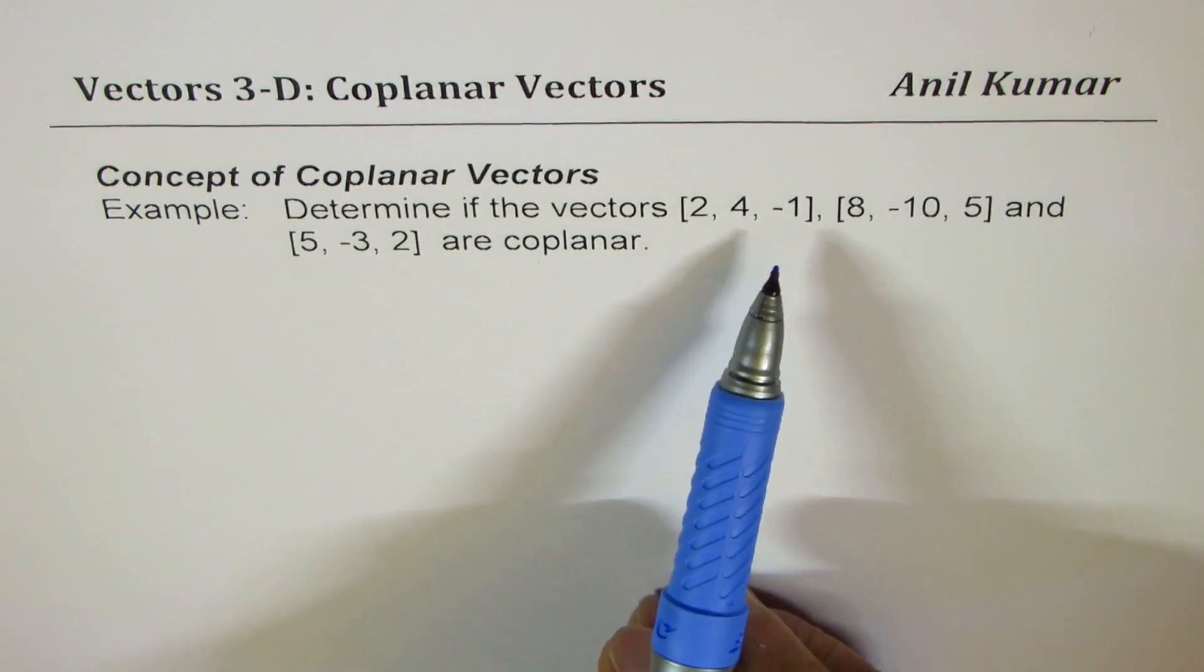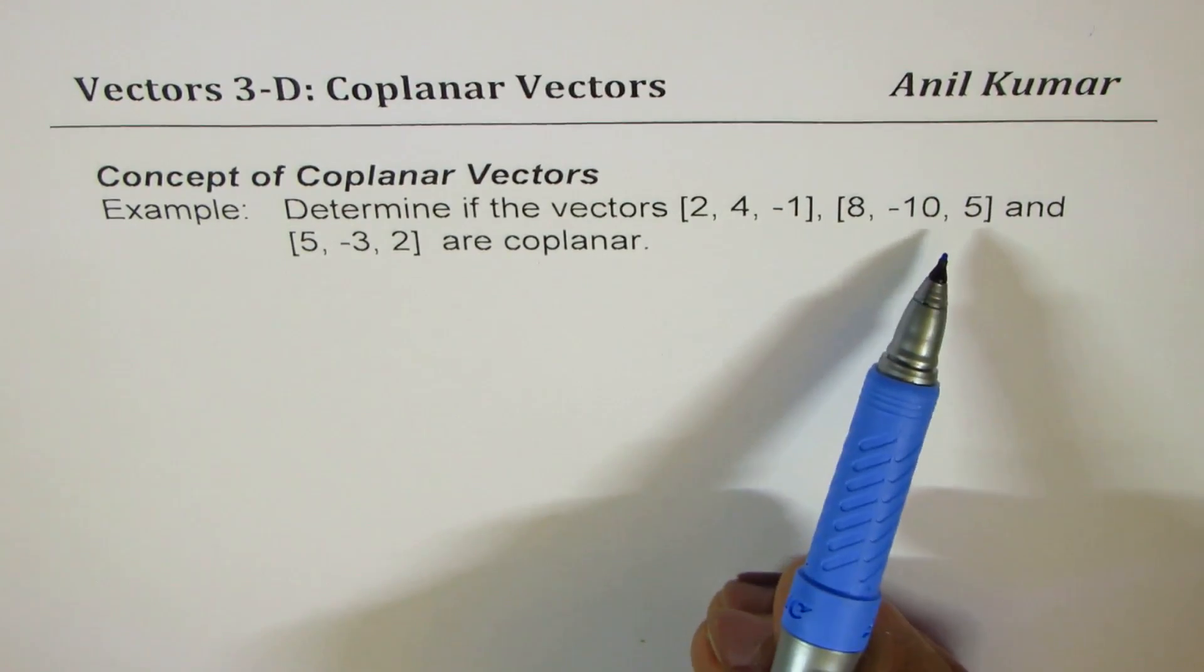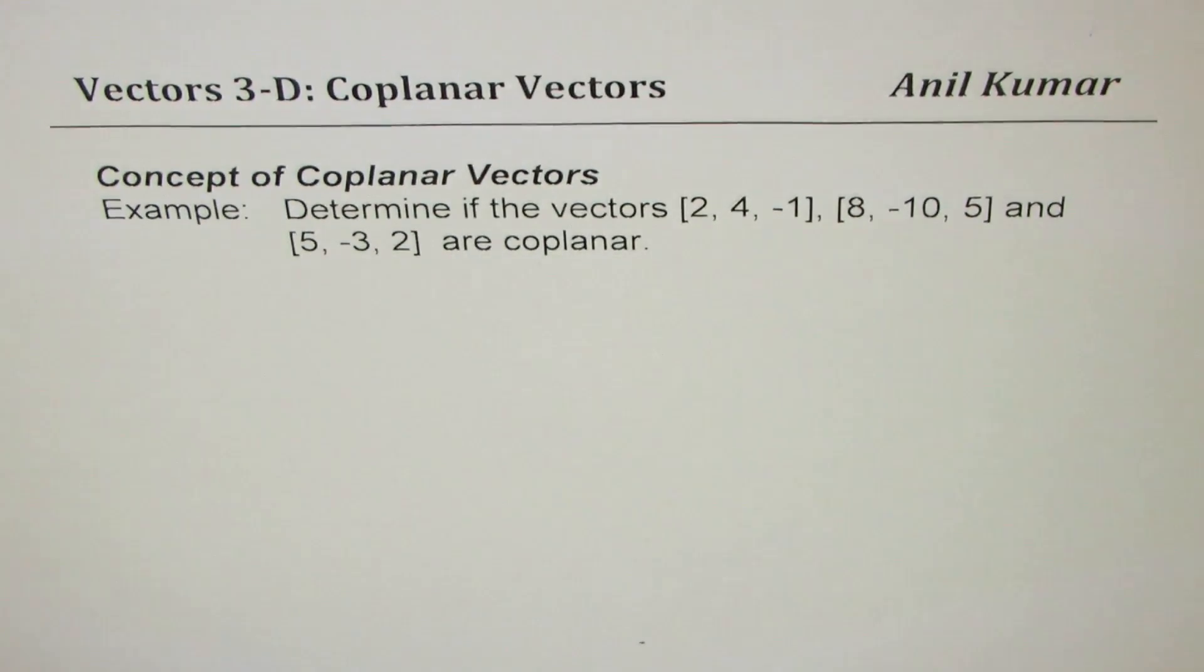Determine if vectors [2, 4, -1], [8, -10, 5] and [5, -3, 2] are coplanar.